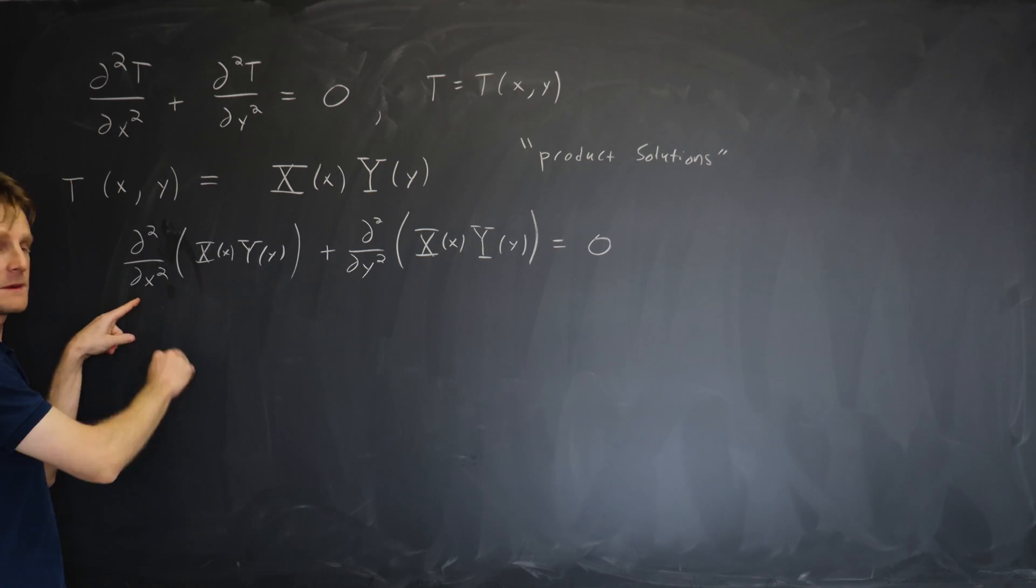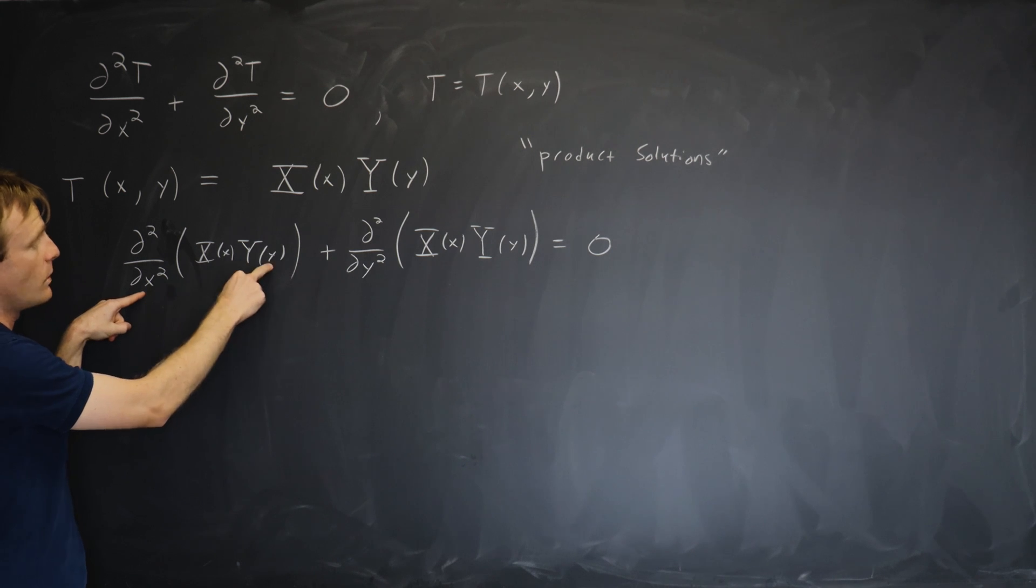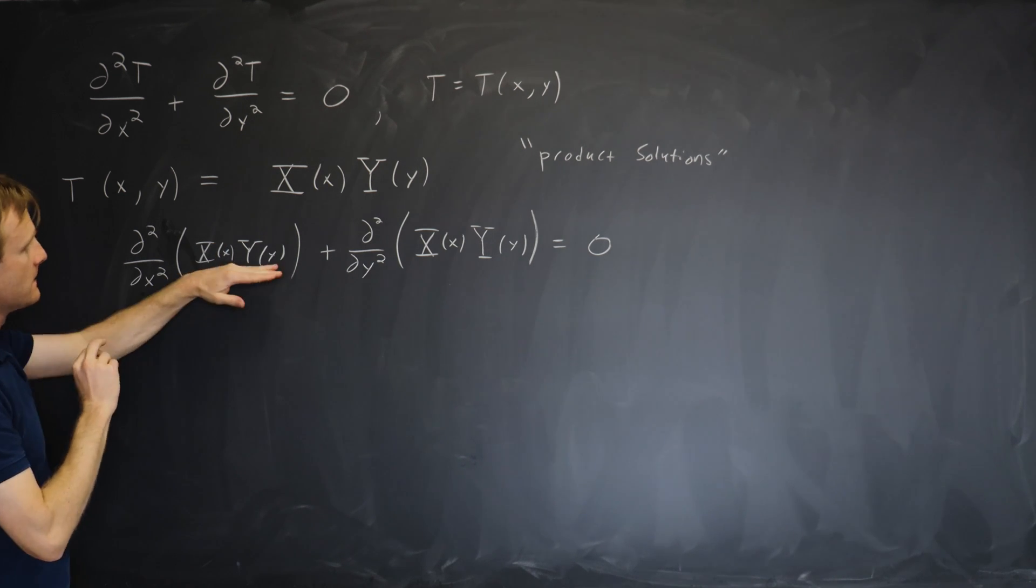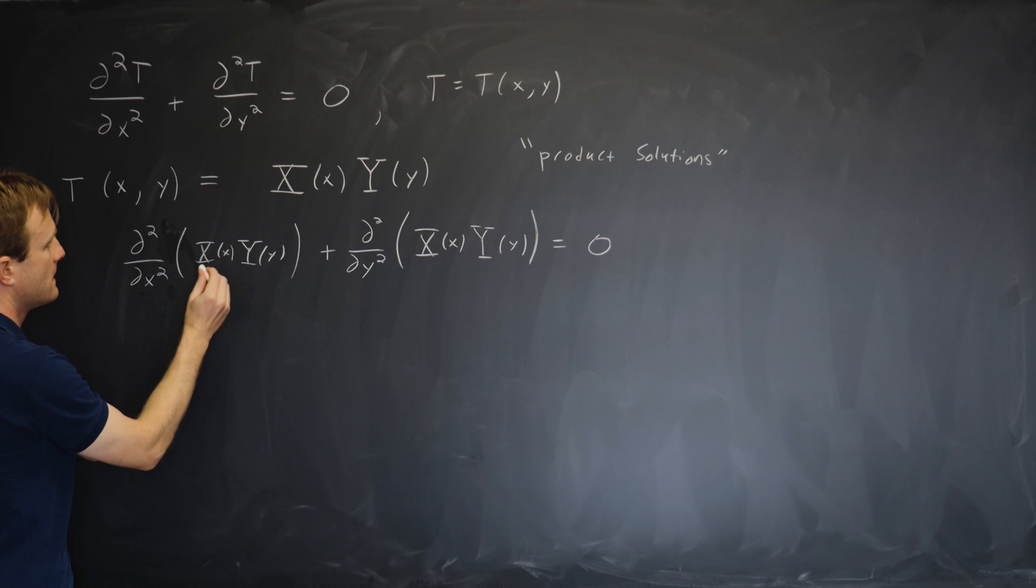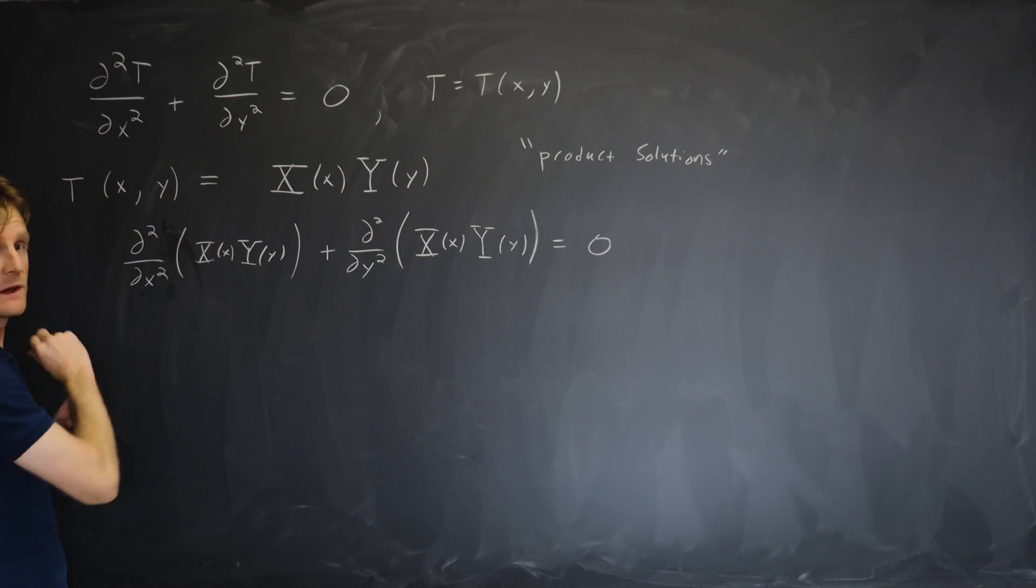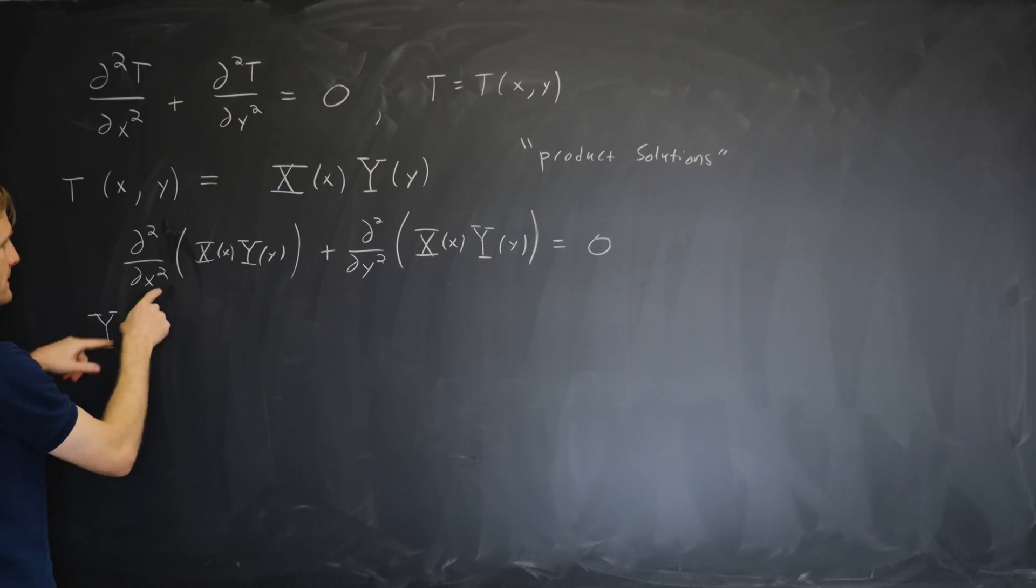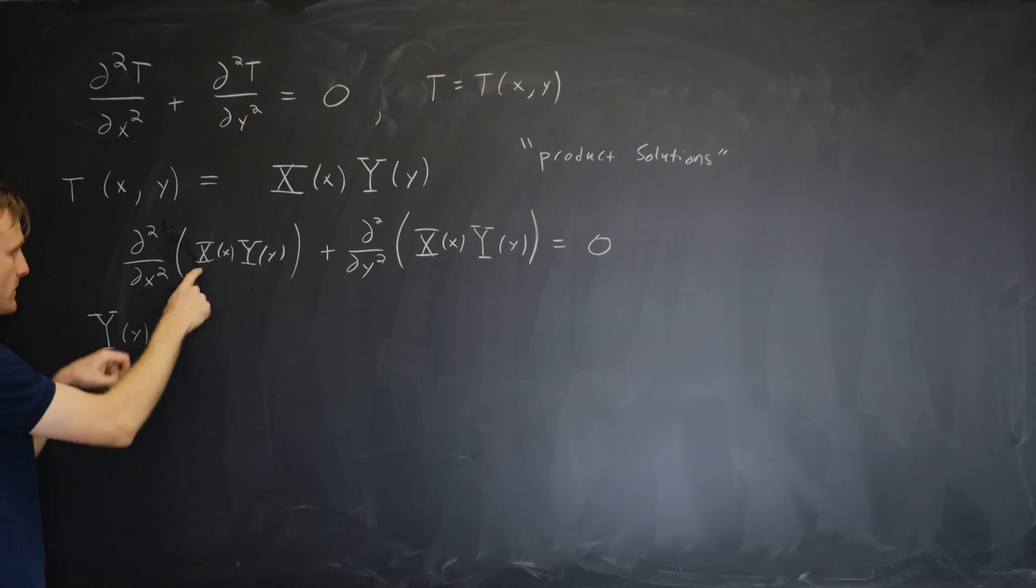And now we notice that because the partial derivative with respect to x keeps y fixed, this capital Y of y may as well be a constant as far as the derivative is concerned and we can bring it out. So we can write capital Y of y times the second x derivative of x of x.